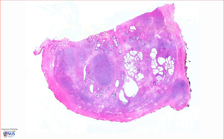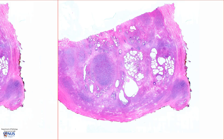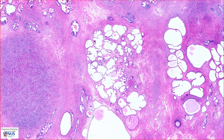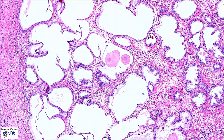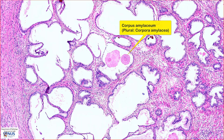Let's have a look at the glandular hyperplastic areas first. We can see that this nodular area is composed of mildly cystically dilated prostatic glands. Some of the glands have these concentric eosinophilic concretions within the glandular lumina, and these are known as corpora amylasia. Corpora amylasia are often found in the lumina of prostatic glands.